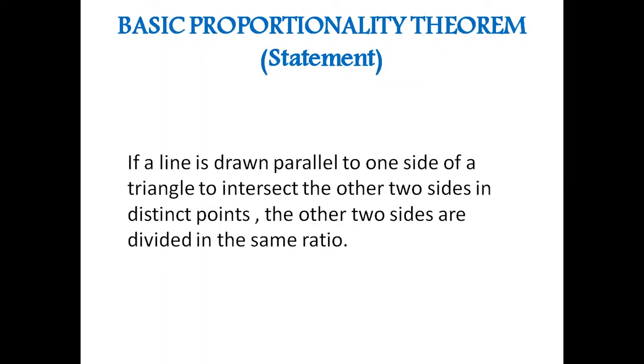Now we will understand the statement step by step. First, we will write given. Here we have a triangle ABC in which a line is drawn parallel to BC which intersects AB at point D and AC at point E.